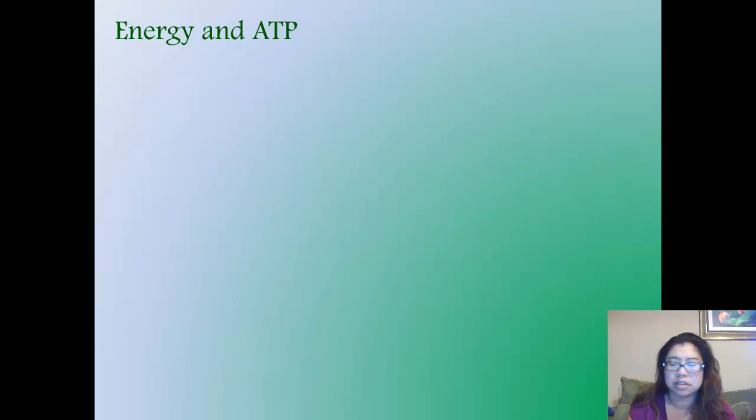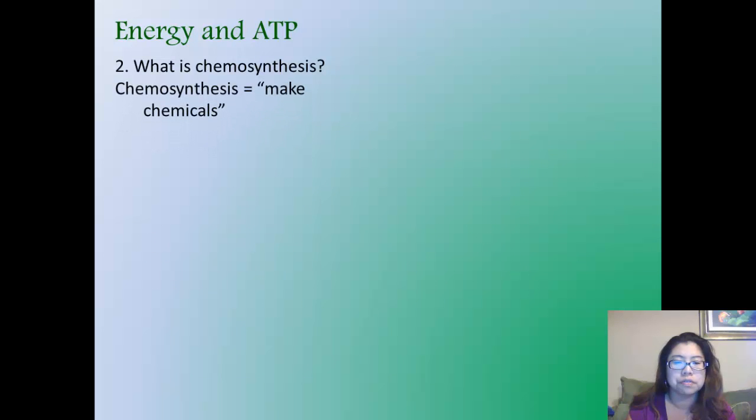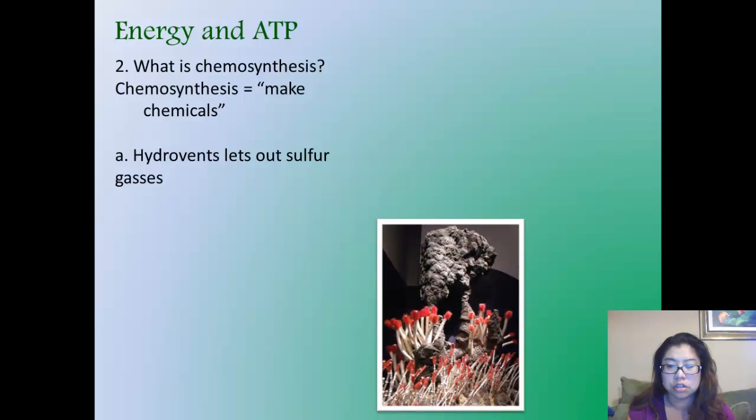So what is chemosynthesis? Chemosynthesis, in definition, means to make chemicals. There are hydrothermal vents that let out sulfur gases as in a primary example. Here is a structure that shows the hydrothermal vents with tube worms growing out of it. The basis of this ecological environment is that there are certain types of bacteria that take the sulfur coming out of these hydrothermal vents in the deep sea, and they make that to survive or produce food.